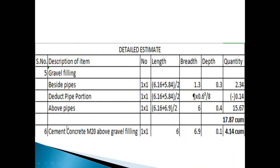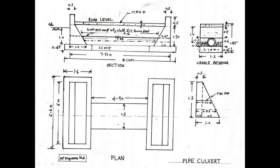Next item is gravel filling beside pipes. That is, here and here. 0.3 by 0.3. Direct semi-circular area portion.